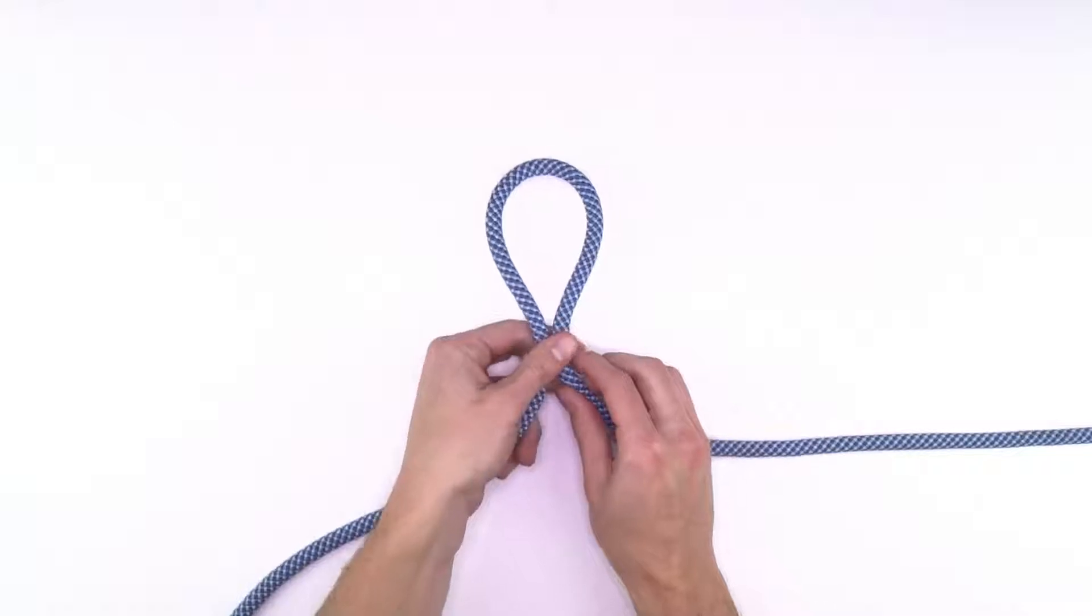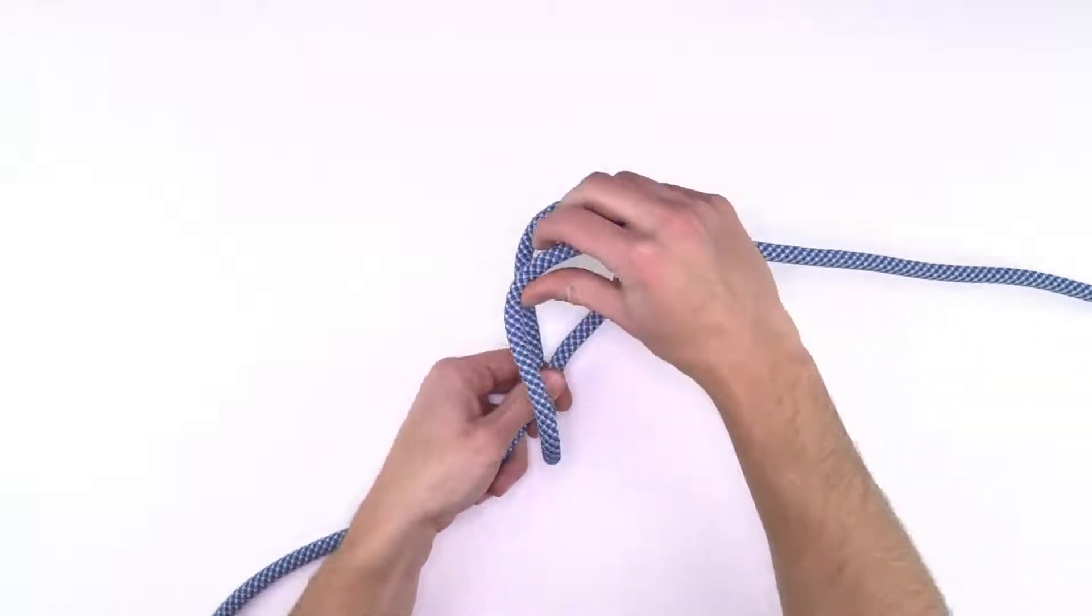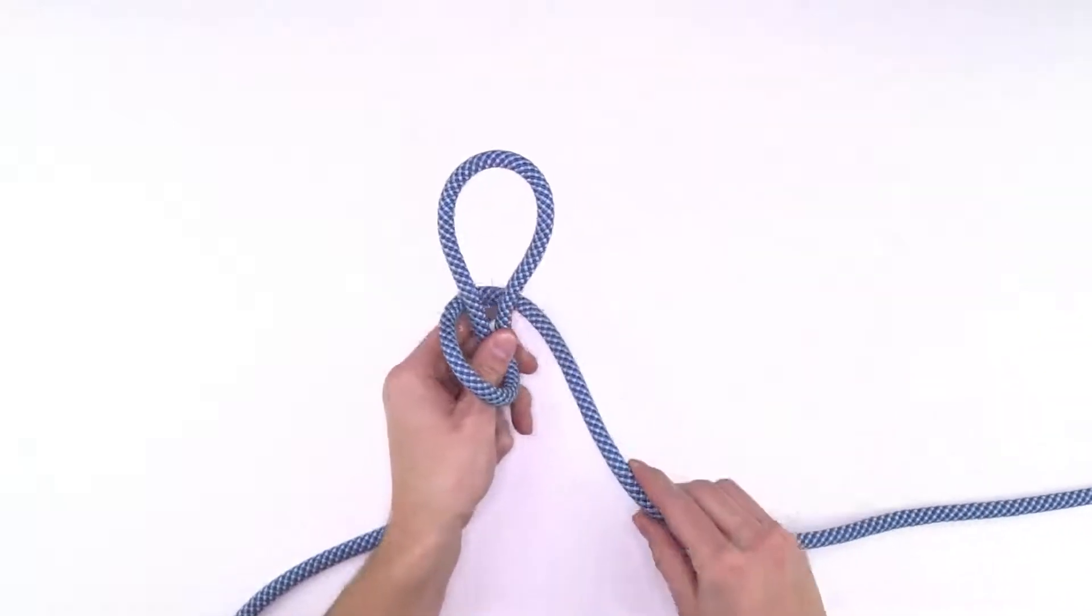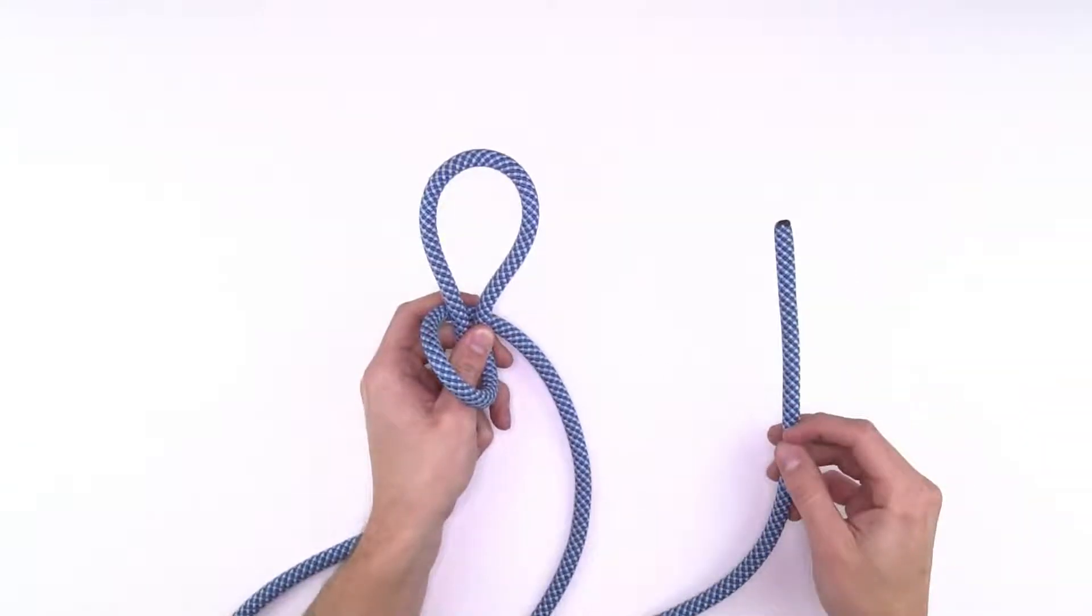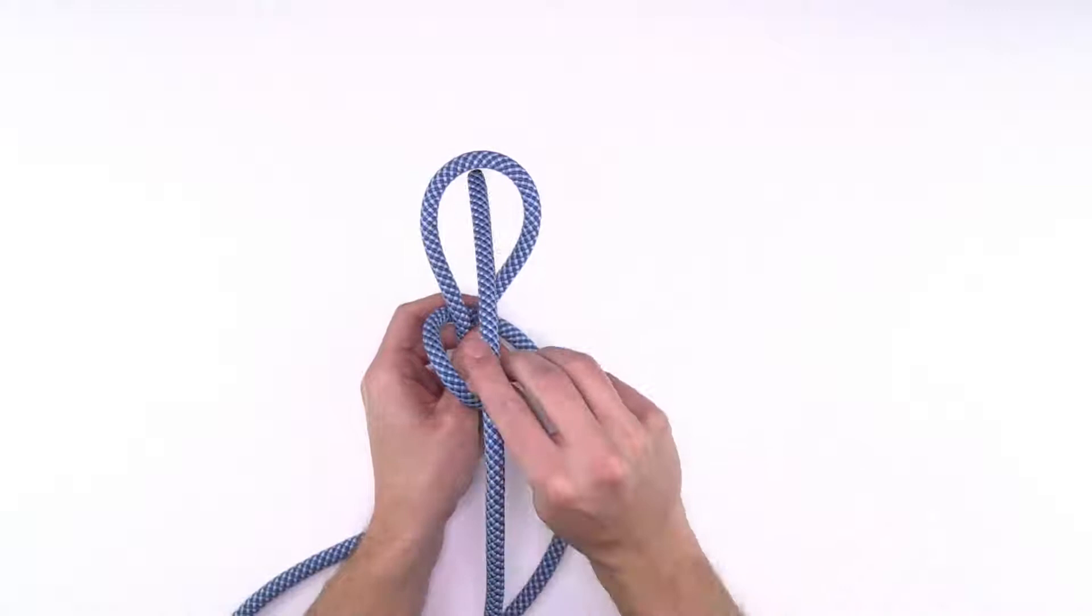Then, with the other hand, grab the tail end of the rope and wrap it across the front and around the bite, bringing it back to the front. Then take the tail end of your rope and feed it through the loop.